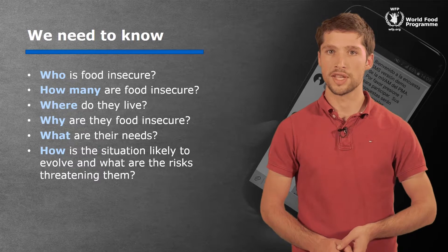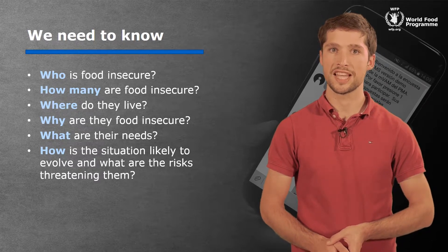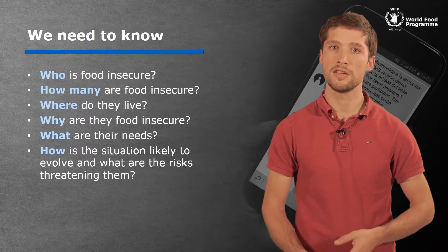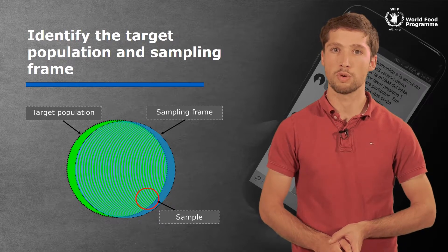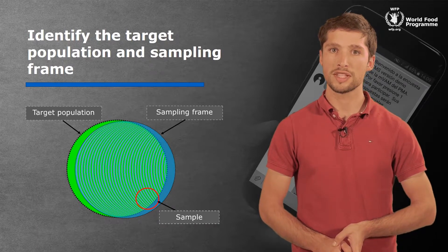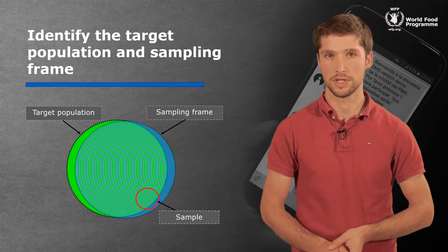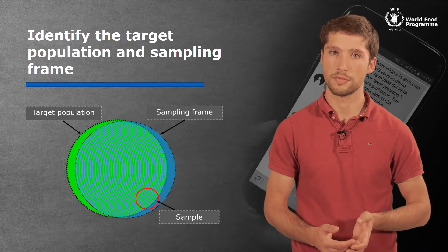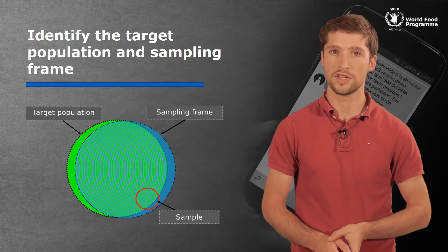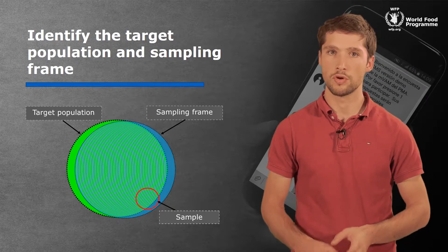Whenever we design a food security survey, we think about these questions and ensure that the survey fills in any information gaps we might have. To do this, we need to identify the target population by talking to our partners to clarify exactly what information they need. Once our information needs are clear, we then define the correct sampling frame — meaning all the individuals or households we will draw the sample from.